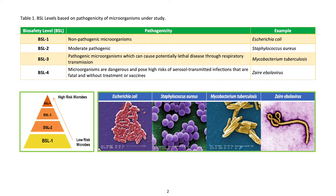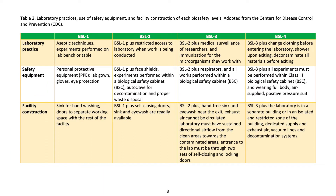BSL levels based on pathogenicity of microorganisms under study: BSL 1 — non-pathogenic microorganisms, example: Escherichia coli. BSL 2 — moderately pathogenic, example: Staphylococcus aureus. BSL 3 — pathogenic microorganisms which can cause potentially lethal disease through respiratory transmission, example: Mycobacterium tuberculosis. BSL 4 — microorganisms that are dangerous, symptoms are fatal and without treatment or vaccines, example: Zaire Ebola virus.